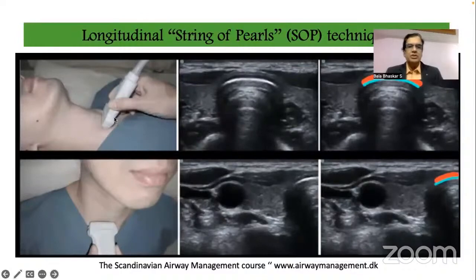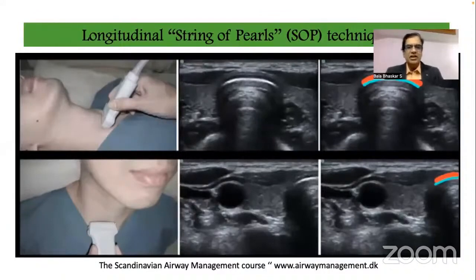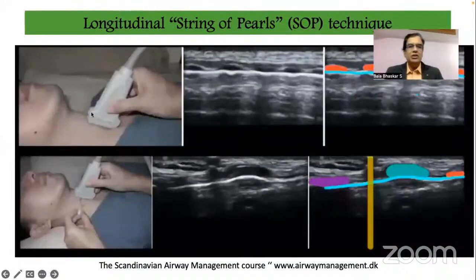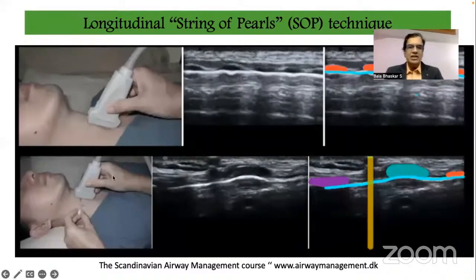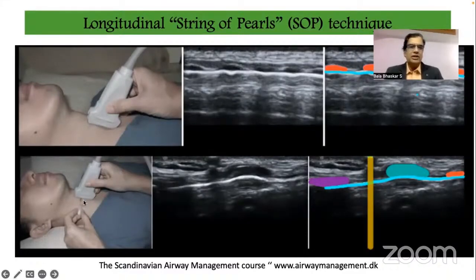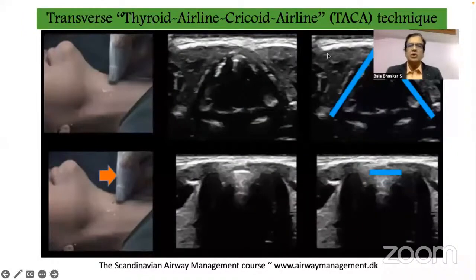The longitudinal approach is better than palpation and quite easy. The thyroid–airline technique is used in patients with a short neck where you cannot hold the probe longitudinally, or those with flexion deformity. In the longitudinal approach, you place the linear probe transversely to find the tracheal ring, then slide slightly right so the right border touches the tracheal ring, then rotate longitudinally to see the tracheal rings as shadows. Slide up to identify the thyroid cartilage, cricoid cartilage, and the cricothyroid membrane, which can be marked and needled under direct vision.